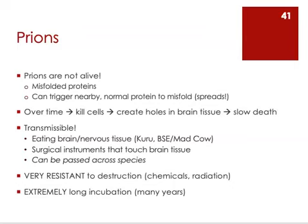Kuru was discovered to be caused by the religious practice of consuming the brains of deceased relatives. At some point someone became infected with a prion disease and died of it, and when that person's family consumed his brain, they came down with the prion disease — and so on, until many members of the tribe succumbed. We learned a lot about prion disease from these unfortunate victims of Kuru. Efforts have been made to educate those peoples to help them stop that particular tradition because it's dangerous.